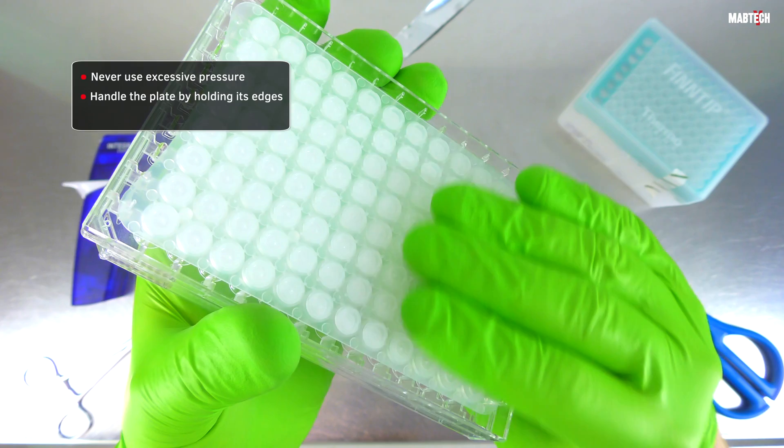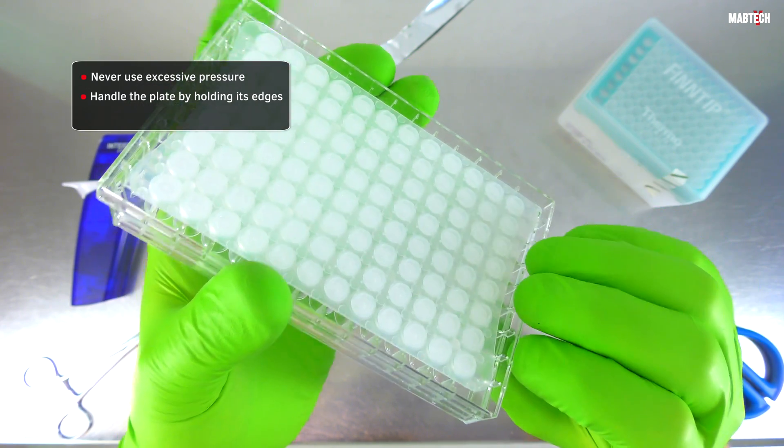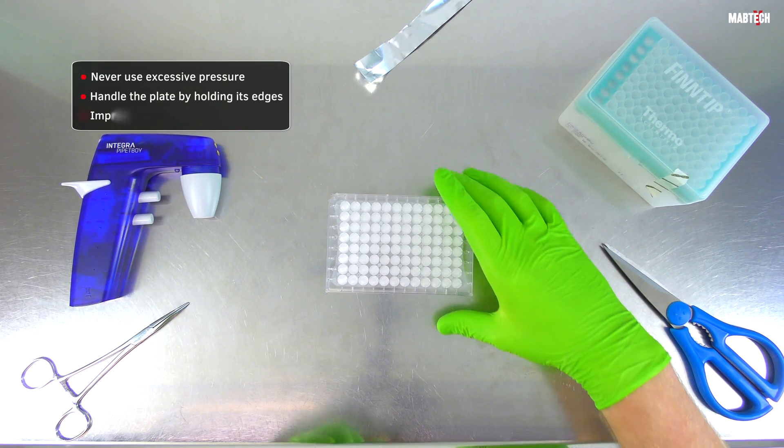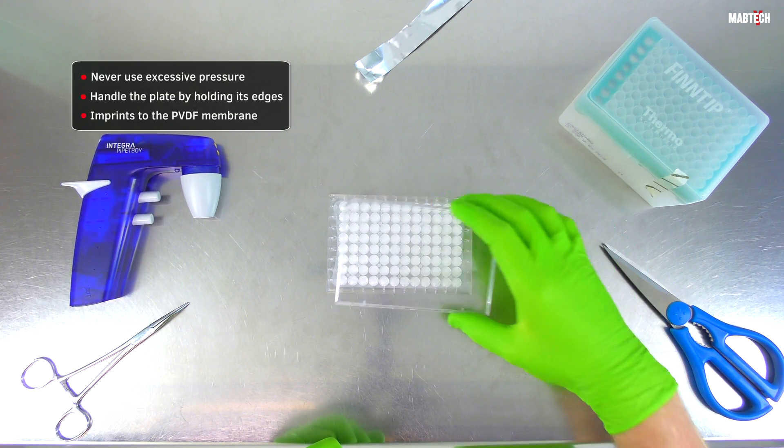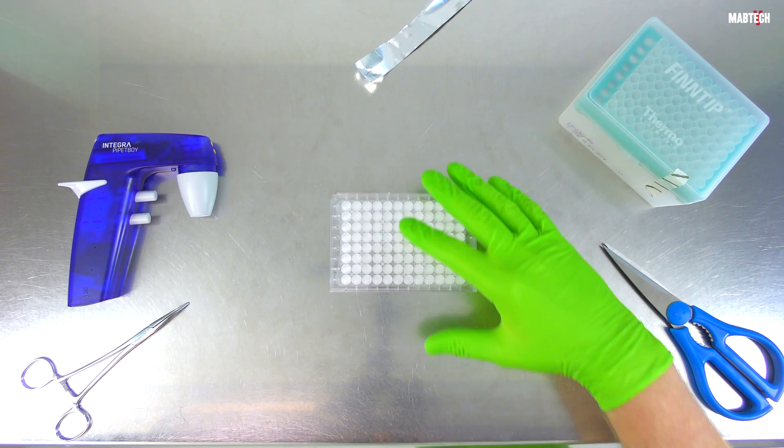You see, the underdrain is of a rather soft structure, so a very firm set of fingers can unfortunately lead to the plastic flexing back into the backside of the membrane, causing imprints to the PVDF membrane. The exact nature of these imprints we will come back to later.